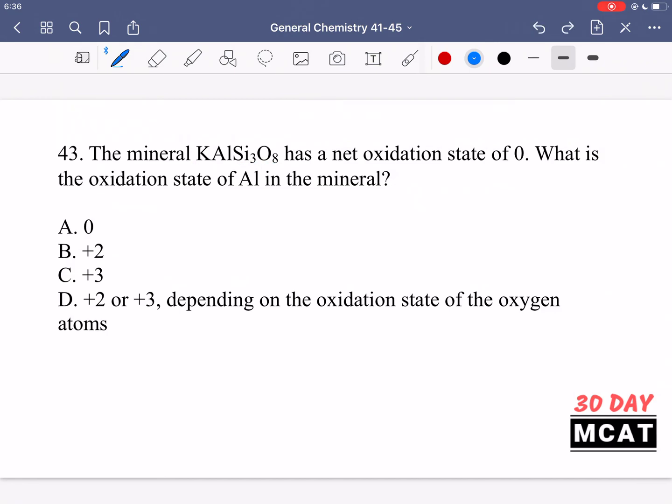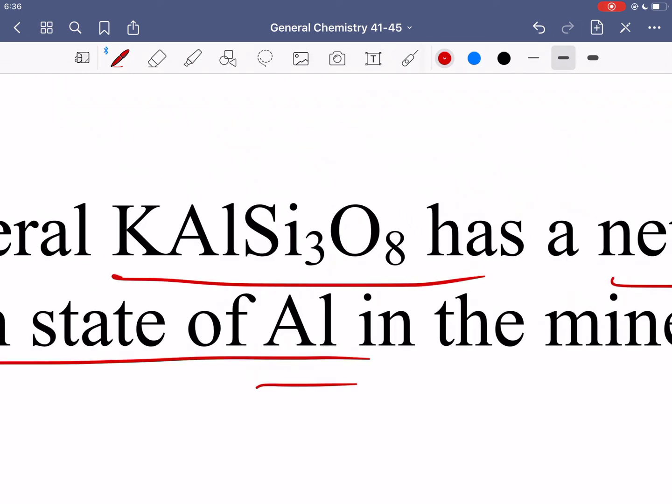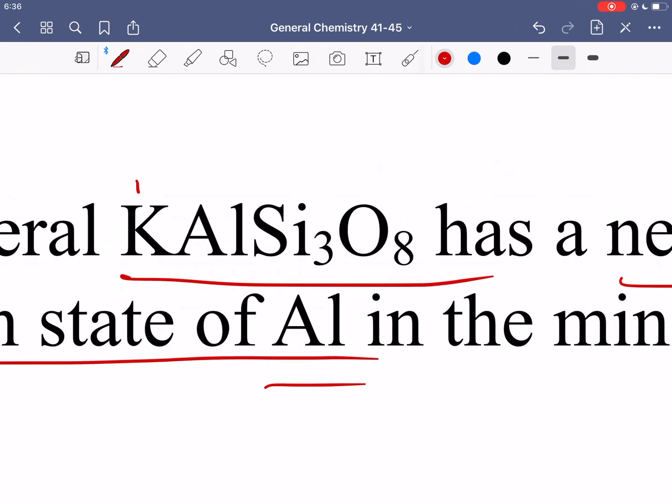So this mineral has a net oxidation state of 0 and we want to know the oxidation state of just aluminum. So to solve for this we know for potassium the oxidation state will be plus 1. So there are some general oxidation states that you should know that are almost always true so in certain situations they'll be true. There are different ones that like oxygen can have and other ones but for the most part oxygen you should know it should be minus 2 especially in this situation so potassium is plus 1. Silicon is in the same group as carbon so just like carbon it's going to be plus 4. So we know those three we just have to figure out for aluminum.